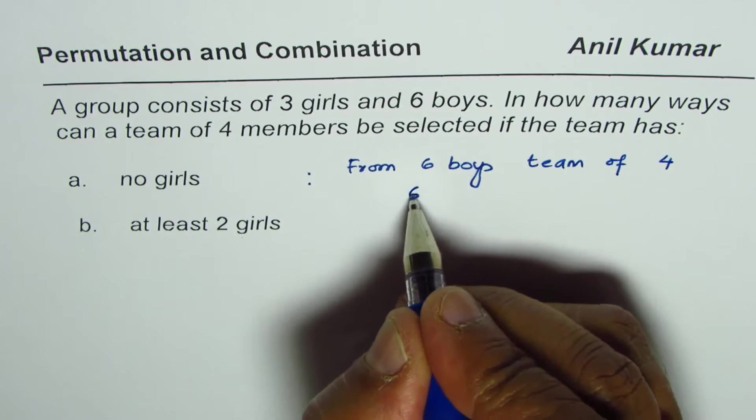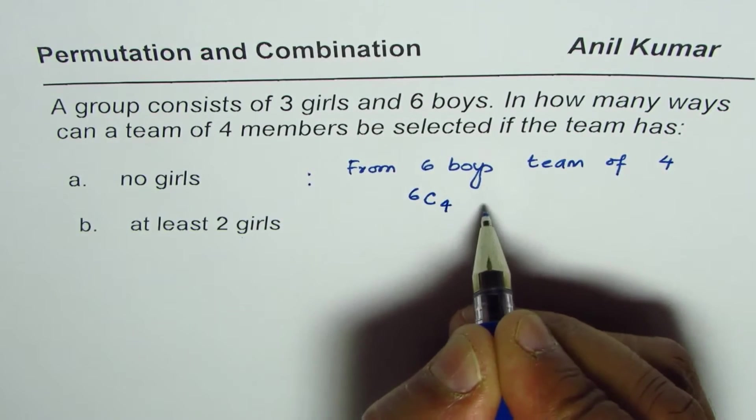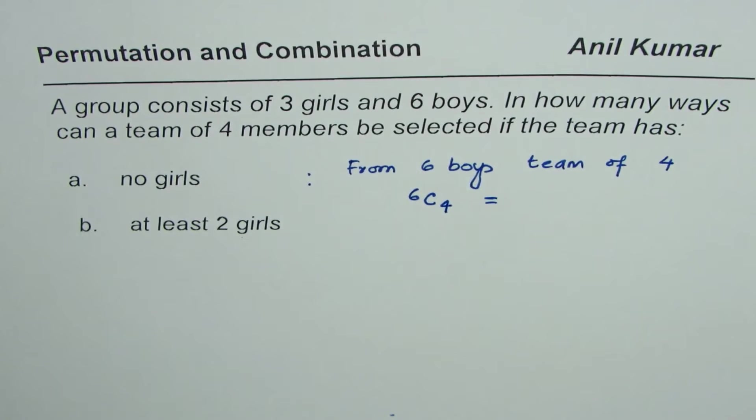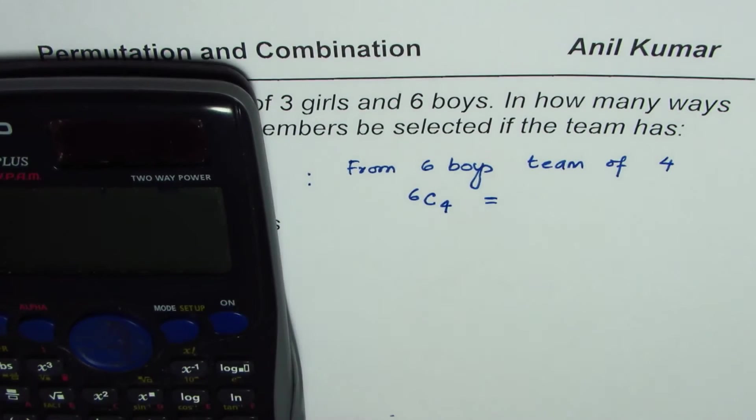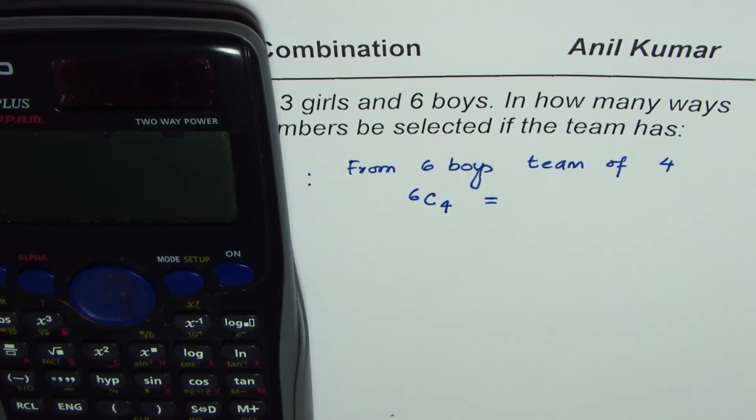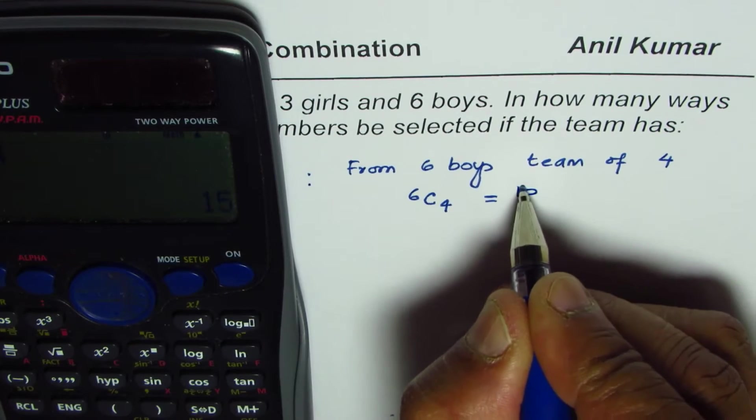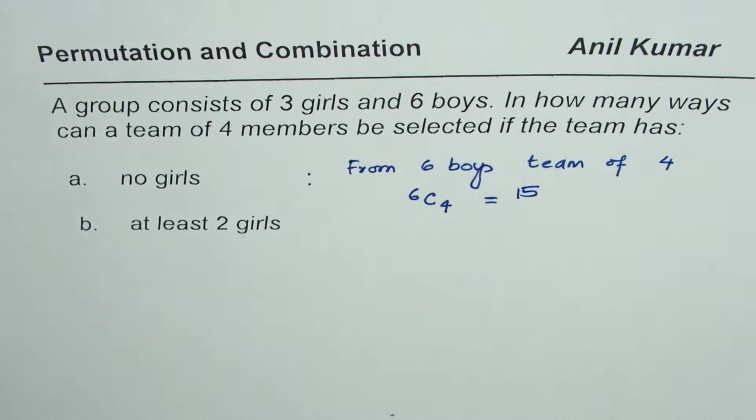So that is your answer. We can just find the value using the calculator. So we have six C four equals to 15. So these are 15 possible cases.